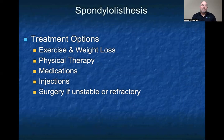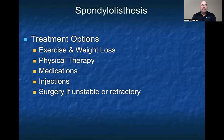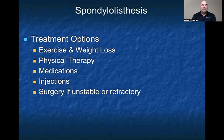Treatment options for spondylolisthesis: exercise and weight loss is always a good idea. Physical therapy is used to maintain core stability and help splint that level, especially if it's stable. Medications can be used for pain control, and if there's periodic radiculopathy, medications can treat that as well. Injections — typically corticosteroid injections into the epidural space — are used to calm down nerve roots. If the segment is unstable or the pain is refractory, these patients tend to be referred for surgery for stabilization.